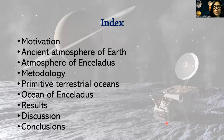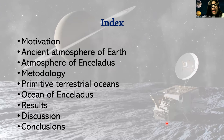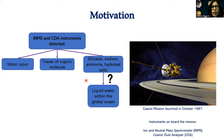Tonight I will cover: the motivation for this research, the ancient atmosphere of Earth, the atmosphere of Enceladus, the methodology applied, the primitive terrestrial oceans, the ocean of Enceladus, results, discussion, and conclusions. The Cassini mission, launched in October 1997 to Saturn, was designed to analyze the chemical composition of Saturn and its moons, including Titan and Enceladus. Instruments on board — the Ion and Neutral Mass Spectrometer (INMS) and the Cosmic Dust Analyzer — detected water vapor, trace organic molecules, silicon, sodium, ammonia, and hydrogen, which could be related to a possible liquid water global ocean located in the south pole of Enceladus.